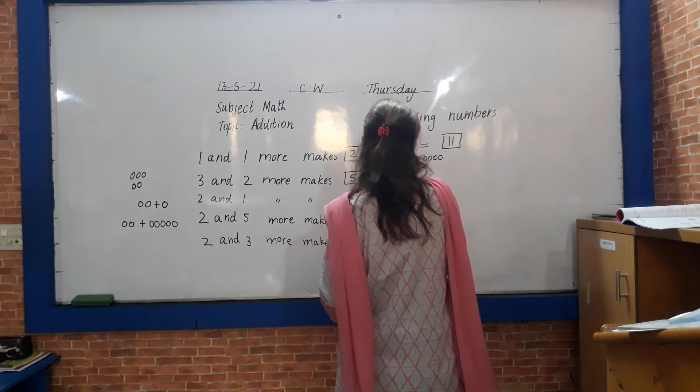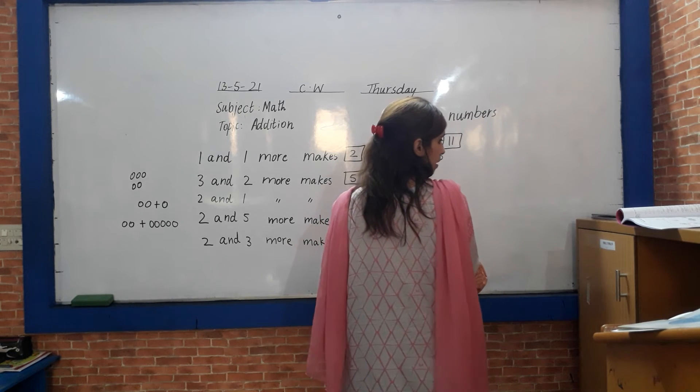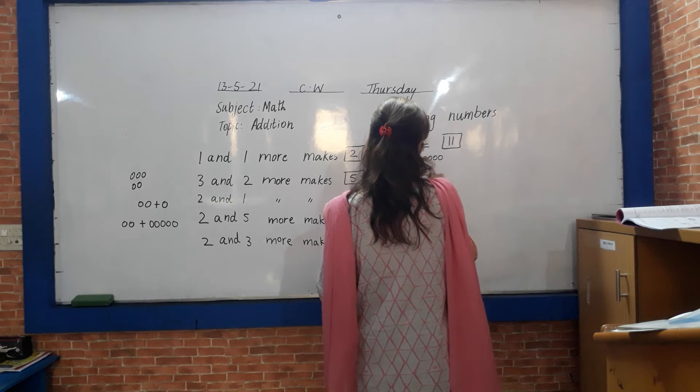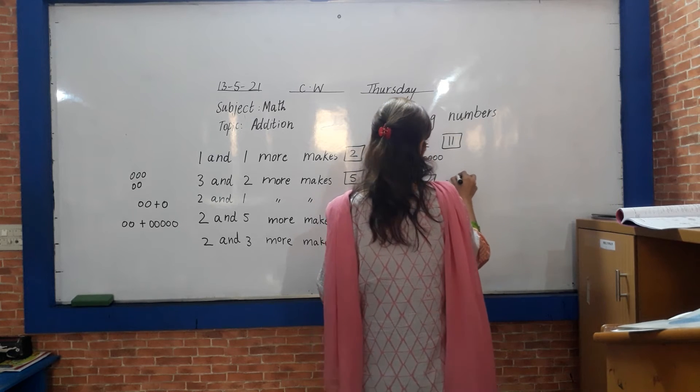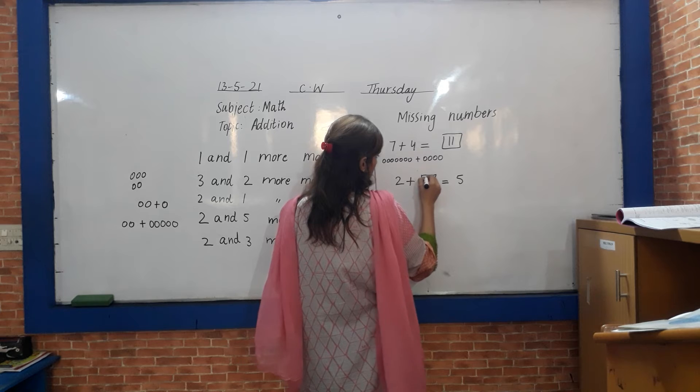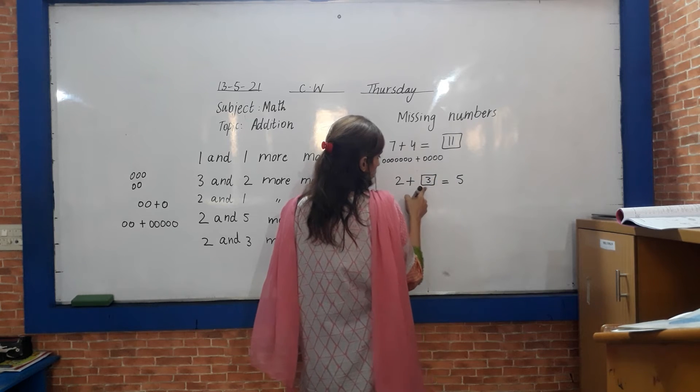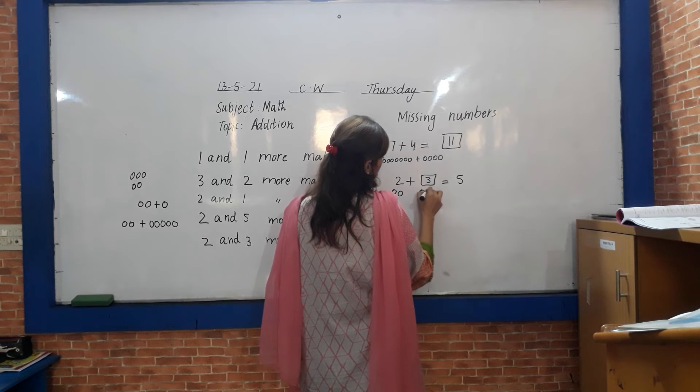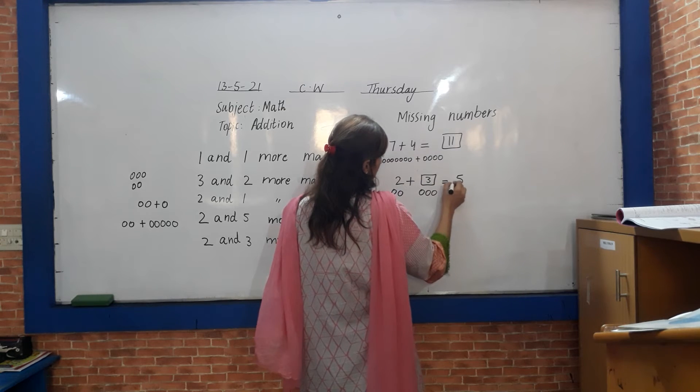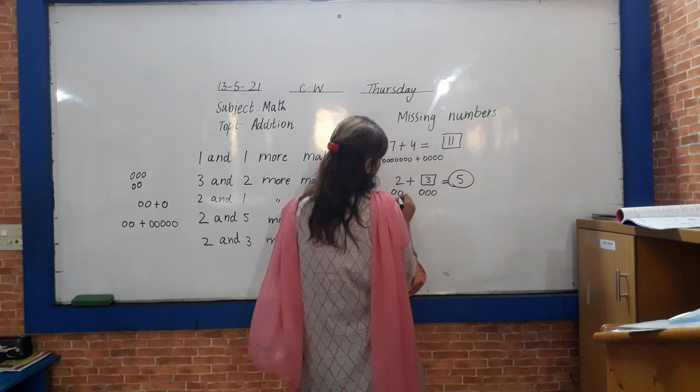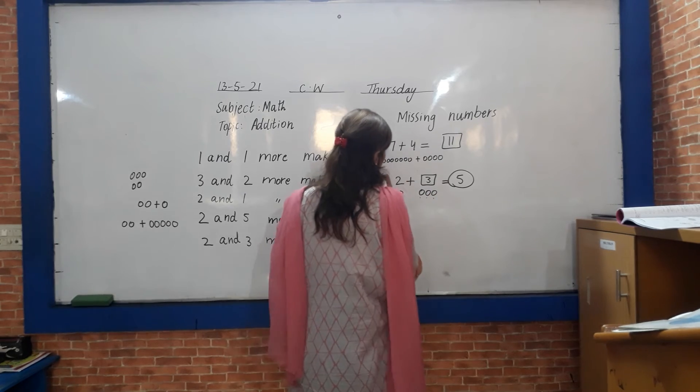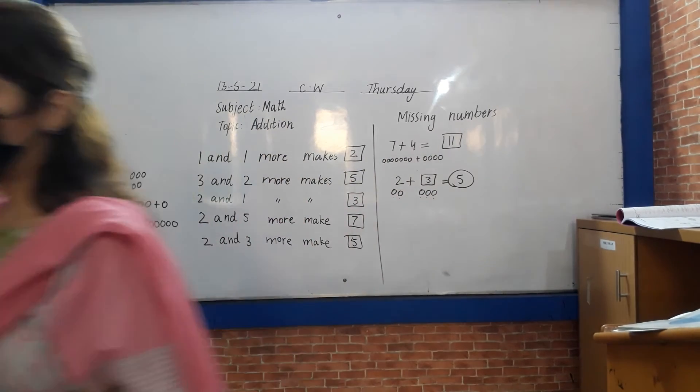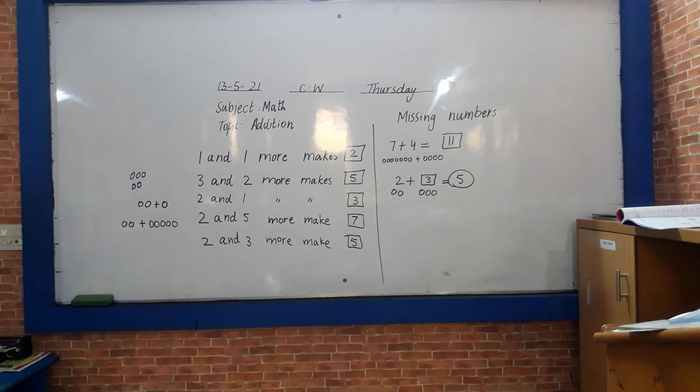Two plus dash equals five. Two plus three. One, two, one, two, three. Answer is five. One, two, three, four, five. These are addition sums from your worksheet.